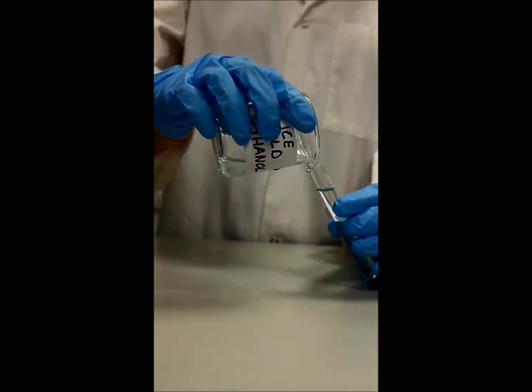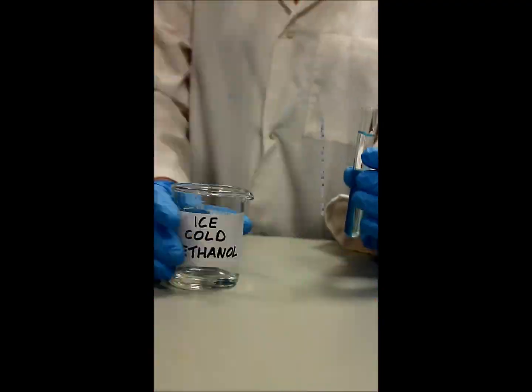Since DNA is insoluble in alcohol, it precipitates out of the solution and causes DNA to become less dense. And so this is why DNA floats to the top of the solution.